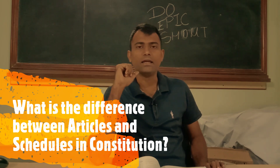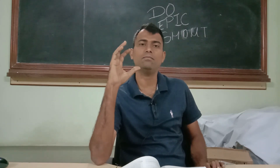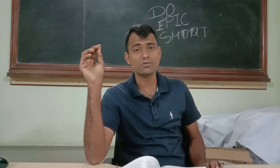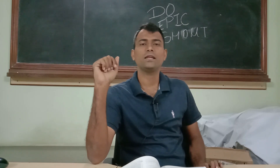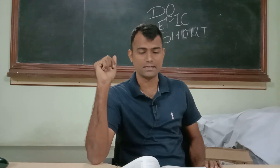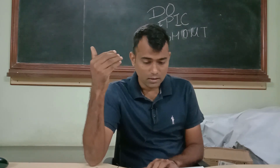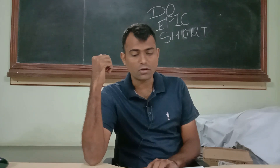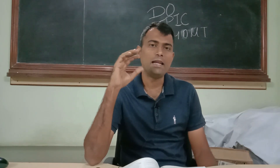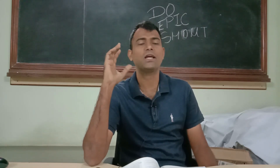Jaha tak articles ki baat karai, toh woh ek chapters ki tarah hai. Jaise humare kitaab hoti hai, ek subject hoti hai — jaise history ek kitaab hai. Us mein index mein jab jate hai toh bahut saare chapters hote hai, chapters ke naam hote hai. Usi tarike se humare articles bhi hai. Articles ek chapter hai, aur uske andar uski detailing hai. Jaise article one ki baat karenge toh name and territory of the union ke upar ye baat karta hai. Article number five ki baat karenge toh it talks about the citizenship at the commencement of the constitution. Toh layman terms mein, articles are nothing but the chapters.